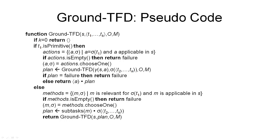Here is the pseudocode for the ground TFD procedure. TFD stands for total order forward decomposition. This procedure deals with total order problems and domains only. It does a forward decomposition, meaning it always starts from the initial state and tries to build the plan up from there. The D is simply for decomposition — it uses methods to solve STN planning problems.